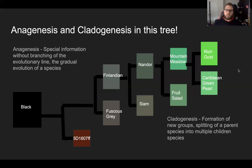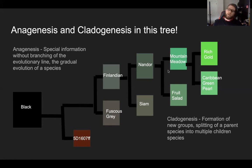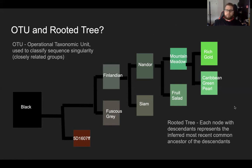Anagenesis and cladogenesis are something we need to look at. Anagenesis is speciation without branching of the evolutionary line, or the gradual evolution of a species — like going from black to green. Cladogenesis is the formation of new groups, or the splitting of a parent species into multiple child species. An example of this would be Mountain Meadow splitting into Rich Gold and Caribbean Green Pearl, or Nander into Mountain Meadow and Fruit Salad.